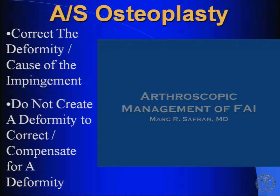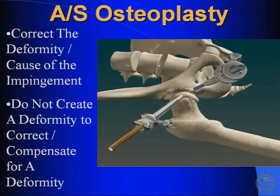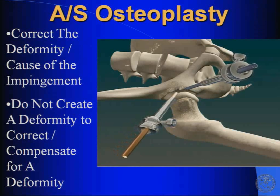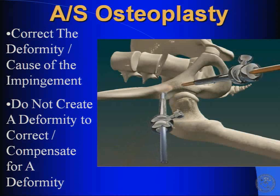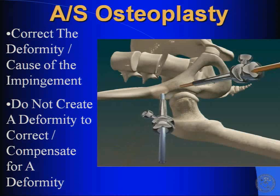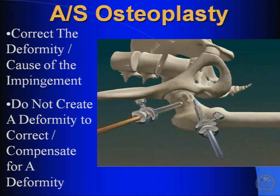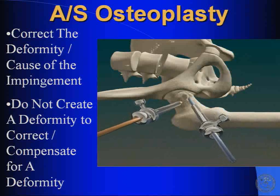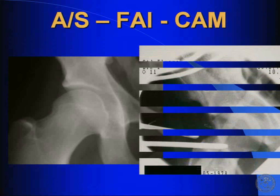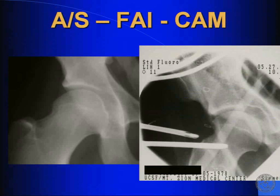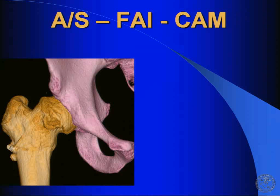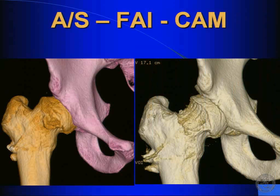In addition to treating the labral pathology, you have to treat the underlying cause — the impingement. You want to correct the deformity which was causing the impingement and the damage. We talk about not wanting to create a deformity to compensate for a deformity. If you have a problem on the acetabular side, you need to do your acetabuloplasty and remove the excessive bone or over-coverage. On the femoral side, you want to remove the femoral head and neck bump and restore that offset. Here's a case we did back in 2002 restoring the offset, and another recent case with slipped capital femoral epiphysis with significant loss of offset, with a dynamic assessment to confirm clearance.